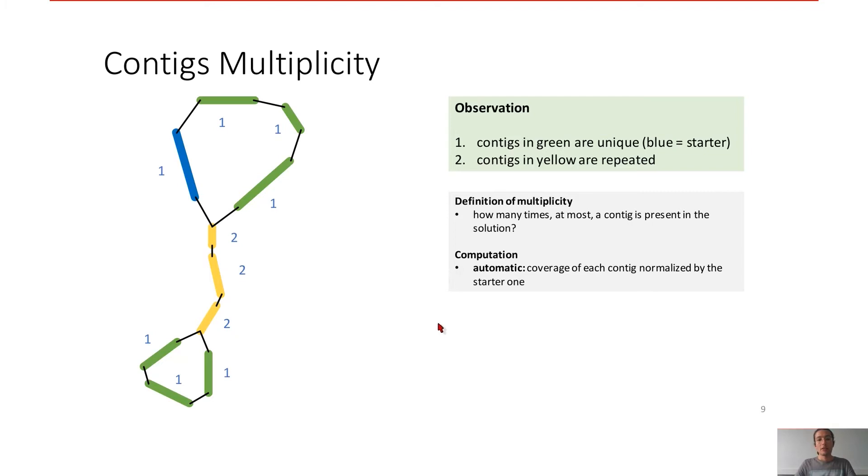First, we will give a multiplicity to each contig. The multiplicity is how many times, at most, a contig is present in the solution. For example, contigs in green and blue, because it is a starter, the blue contig, the multiplicity is equal to 1 because all these green and blue contigs belong to single copies.